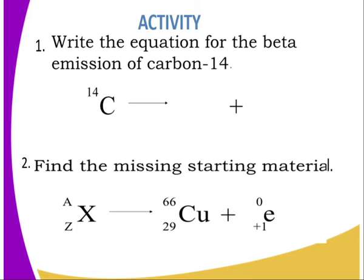To consolidate today's lesson, answer the following questions. Question one: write the equation for the beta emission of carbon-14 — when carbon-14 undergoes beta decay, what new nuclide or products are formed? Question two: find the missing starting material — an unstable nuclide X with mass number A and atomic number Z undergoes beta decay by losing a beta particle; what is the composition of the starting material?